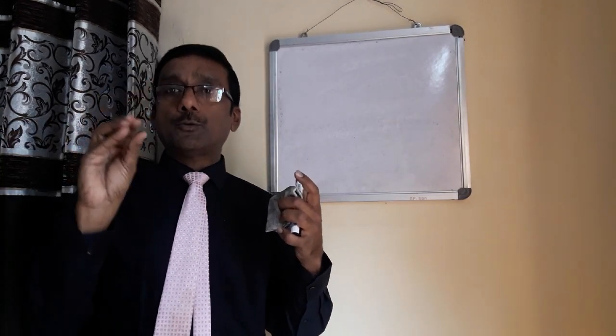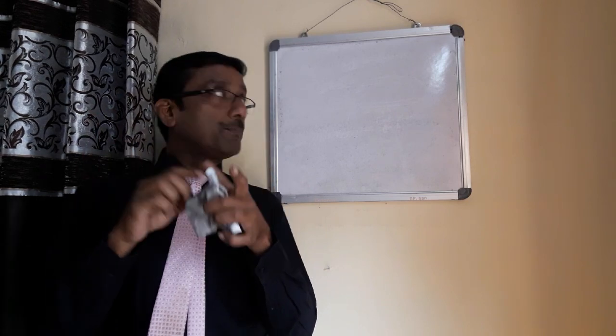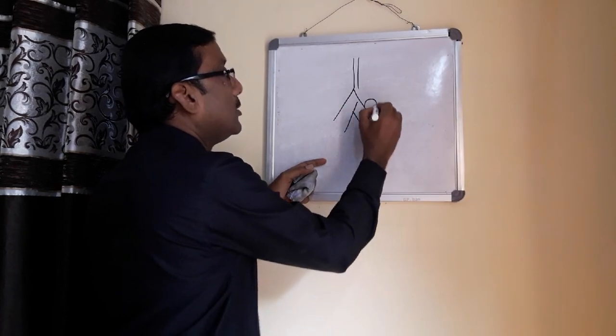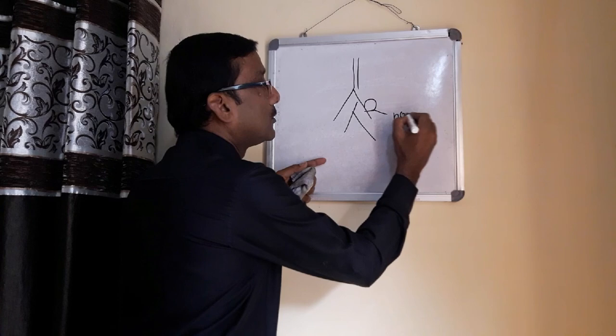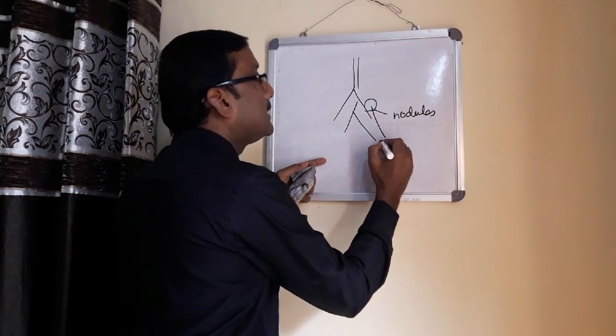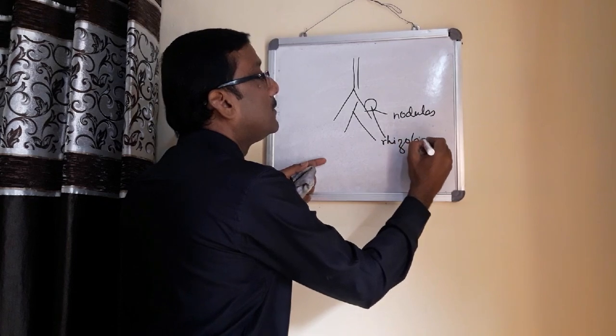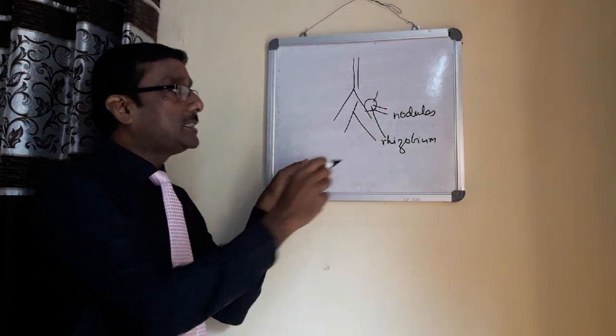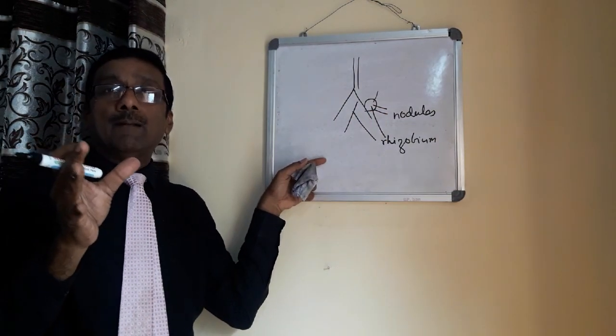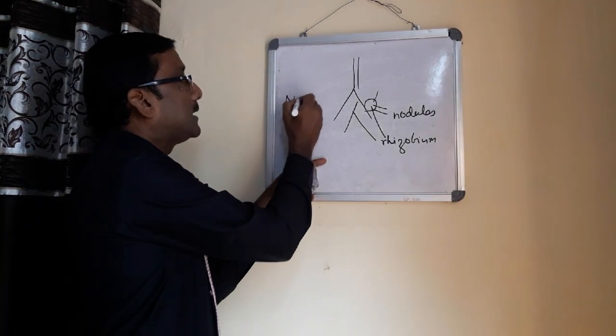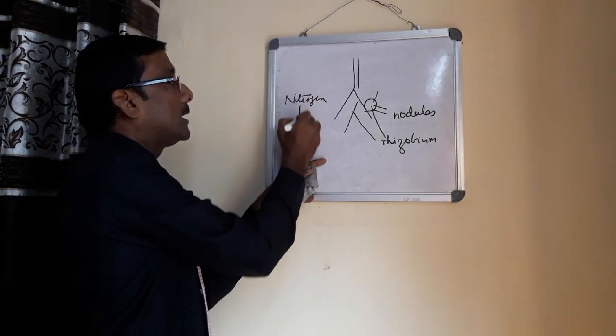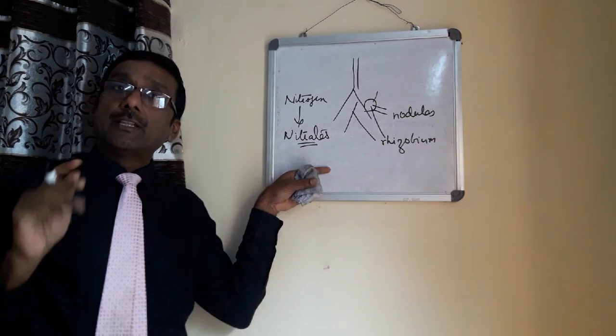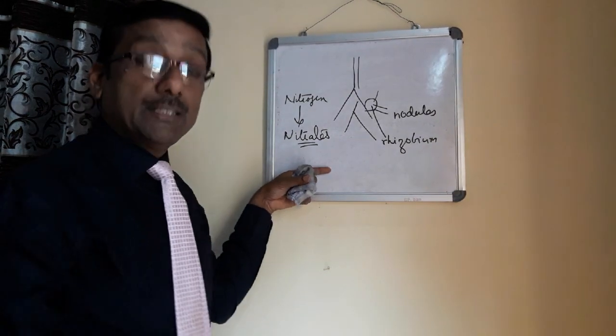And lastly, rhizobium bacteria. This bacteria is available in root nodules of leguminous plants. Example, pea. They have a cluster-like root nodules. When this root nodule burst open, the structure is like this. In the roots of a leguminous plant, you have root nodules. These are the nodules. These nodules contain a bacteria known as rhizobium bacteria. When this root nodule burst open, they release this rhizobium bacteria into the soil. This bacteria converts atmospheric nitrogen or the nitrogen available in the soil into nitrates. Now, these nitrates help in increasing the fertility of the soil. These are the useful bacteria.